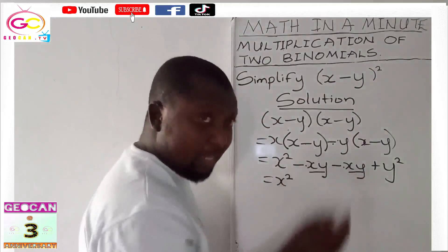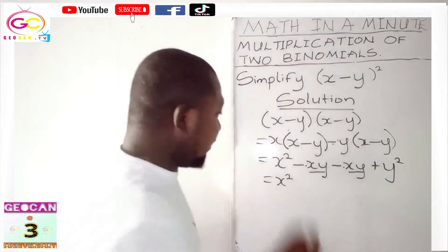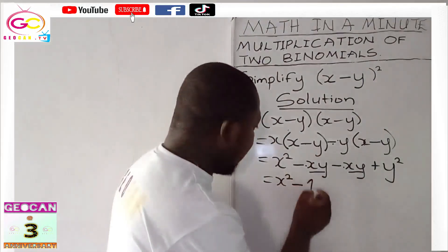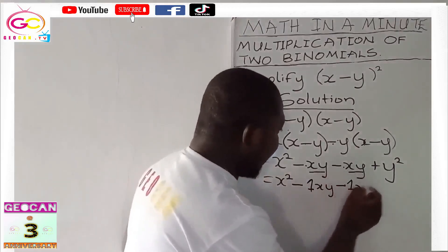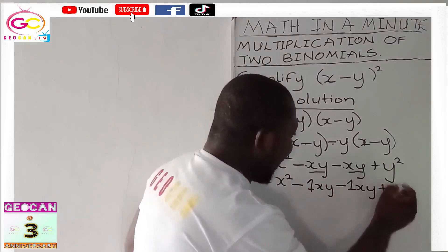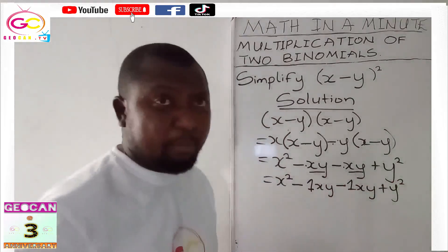This xy is the same as one in front. Please, I'm going to do something. Pay critical attention. I can write it as -1xy - 1xy + y². Why am I doing this? I'm doing this for you to understand and appreciate the answer.